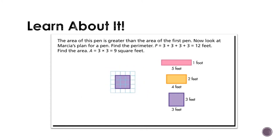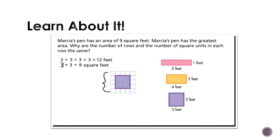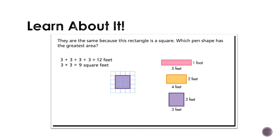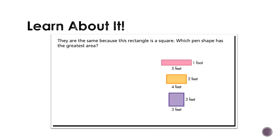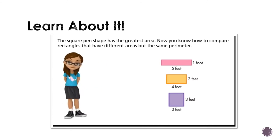Now, look at Marcia's plan for a pen. Find the perimeter: P equals 3 plus 3 plus 3 plus 3 equals 12 feet. Find the area: A equals 3 times 3 equals 9 square feet. The square has the greatest area. Why are the number of rows and the number of square units in each row the same? They are the same because this rectangle is a square. The square pen shape has the greatest area. Now you know how to compare rectangles that have different areas but the same perimeter.